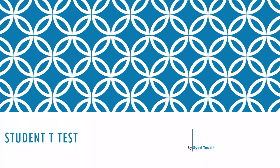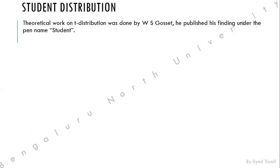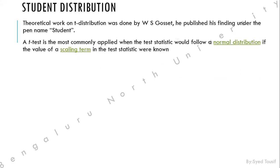Hello, this is Saito Asif. Today we'll check basic information about the Student t-test: what it is, what the formula is, and how we can use the built-in functionality of Scilab for the Student t-test. The Student t-test is also called the Student distribution. The theoretical work on t-distribution was done by W.F. Gossett, who published his findings under the pen name 'Student.'